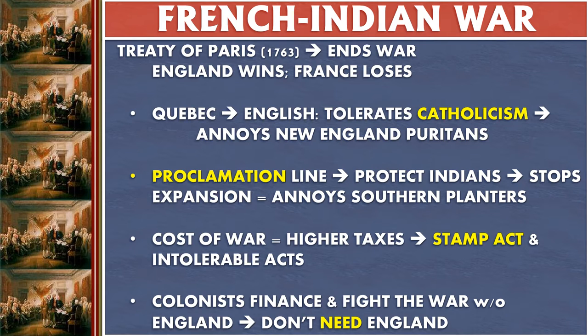The French and Indian War ended in 1763, and to make a long story short, England wins this war and France loses. Just focusing on what was happening in North America, France lost a good chunk of her colonies and they came under English control. What is now the Midwest — Ohio, Indiana, Illinois, Michigan — and what we consider Canada, so basically Ontario and Quebec, became part of British North America.